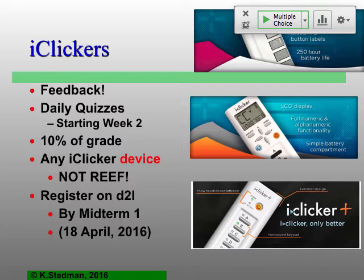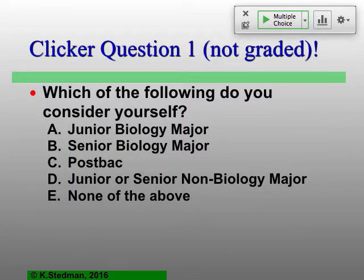You need to register these on D2L — there's a link on D2L, and a number of you have already filled that in. Register by the first midterm, which is the 18th of April. Now that so many of you have your clickers already, we can do a non-graded clicker question: which of the following do you consider yourself? Junior molecular biology major, senior biology major, post-bac junior, senior, non-biology, or none of the above.